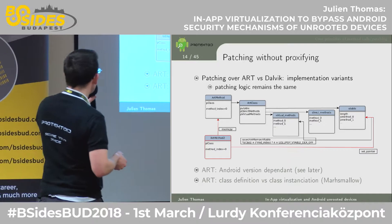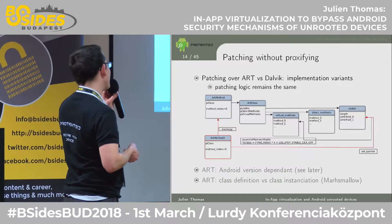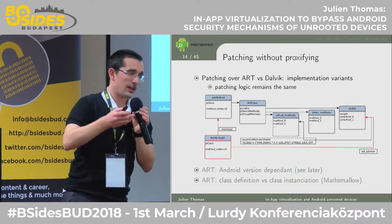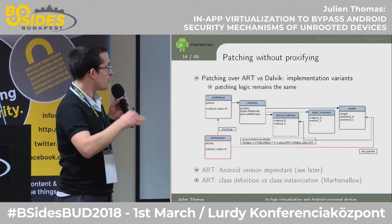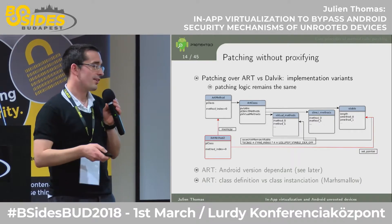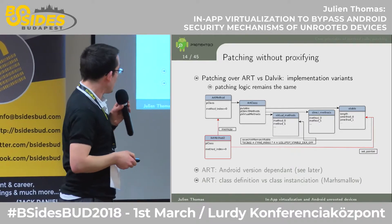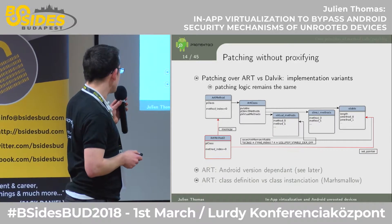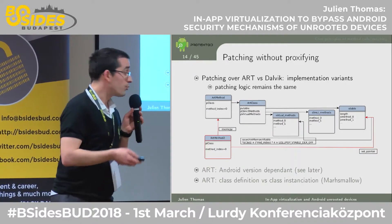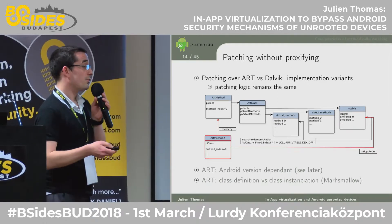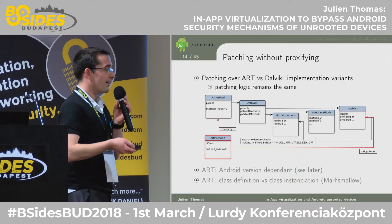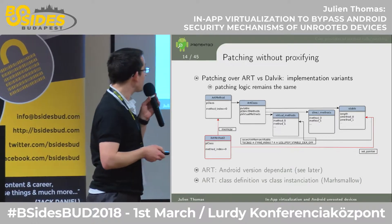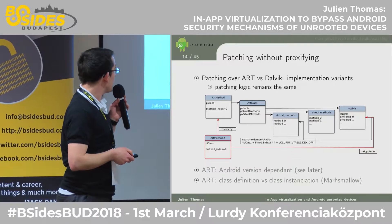A key complication: with ART and Android since Lollipop, each time they move to a new version of Android, they also change the implementation of the ART structures. One example is moving to 64-bit from 32-bit, which impacts how we find the index and the structure we want to modify.